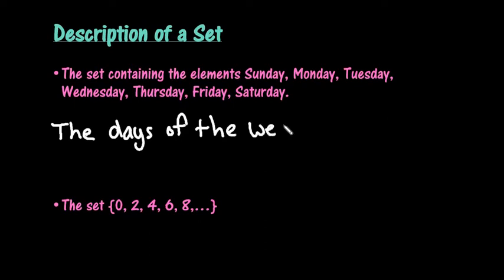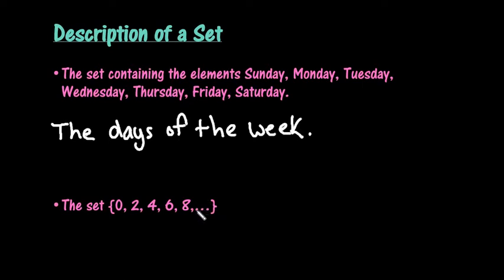When it asks you to describe, you literally are just writing out what does it contain. The second one that I have is a set of numbers. This is in roster form where it's already in set notation: 0, 2, 4, 6, 8. The dot, dot, dot means that it continues forever and ever. These are known as the ellipsis and it means that it just continues on forever and ever.